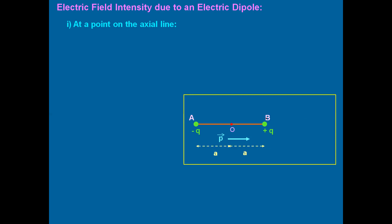As you can see, we are going to find the electric field at the axial line — that is, when the point P is lying on the axis of the dipole. Let X be the distance of point P from the midpoint of the dipole. There will be two electric fields acting at point P because there are two charges — one located at A and one at B. The electric field due to the minus Q charge is written as EA, and the electric field due to plus Q charge is written as EB.